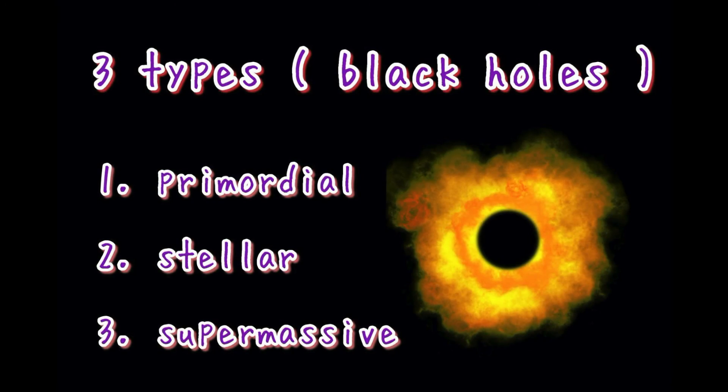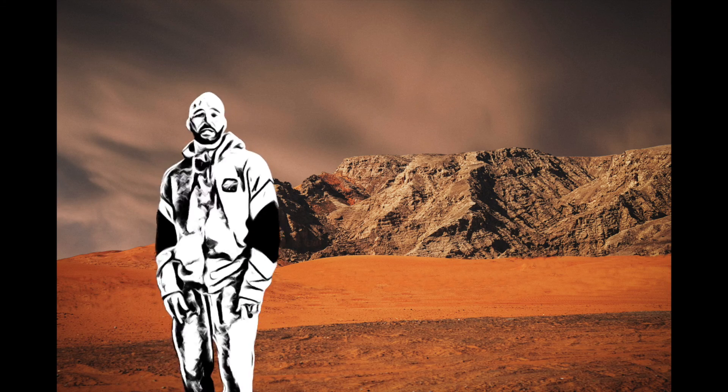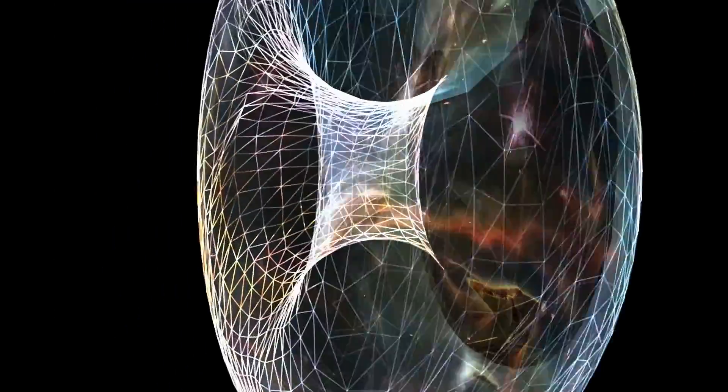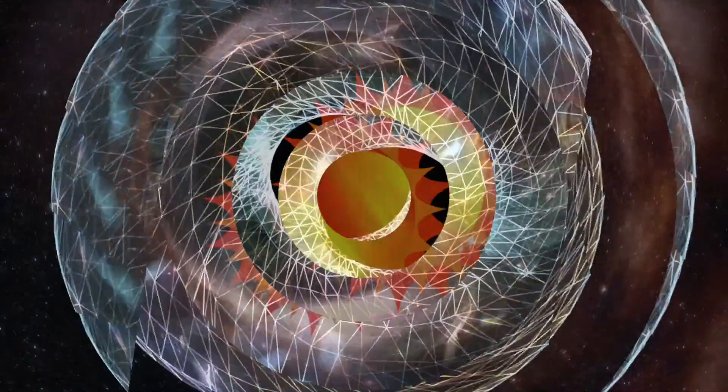Three types of black holes, the first type's a primordial, which sometimes could be so small you couldn't see it with a microscope. Second type's called stellar, they're the most popular ones. The most common type of black hole, size 10 times the sun.